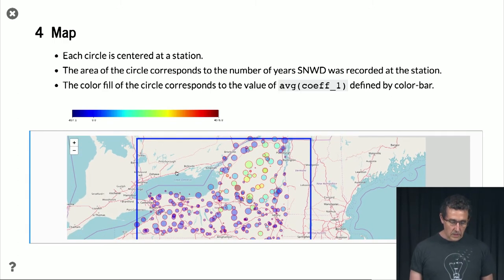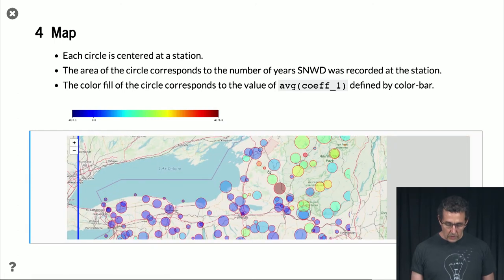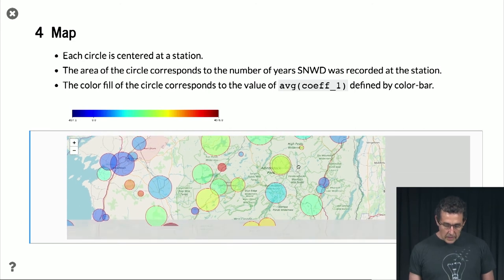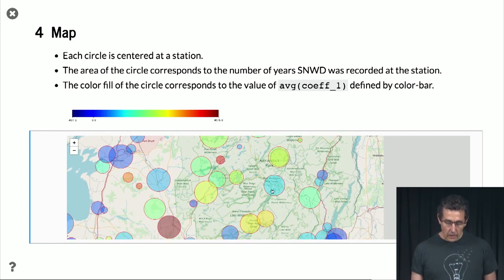And we can zoom in, and the nice thing about Leaflet is that it will give you more information about the area the more you zoom in. And basically what we see is, yes, the high level of snow is in the Adirondacks.